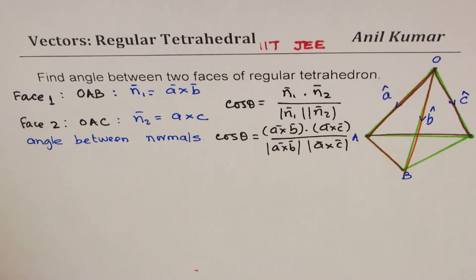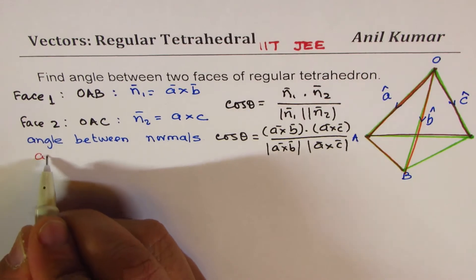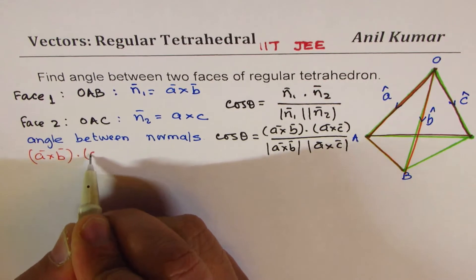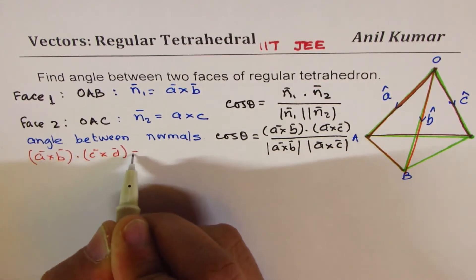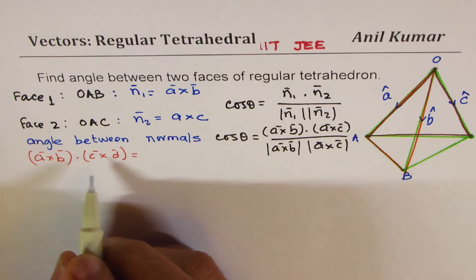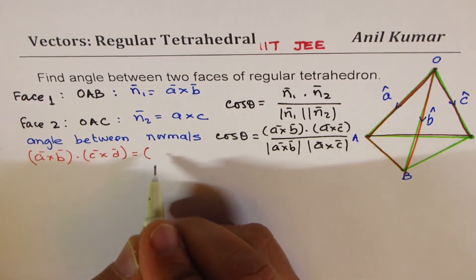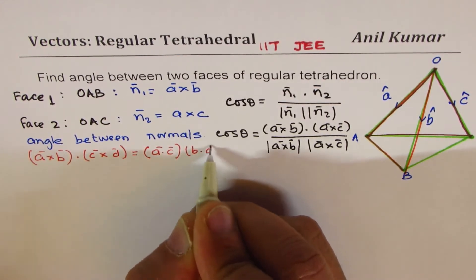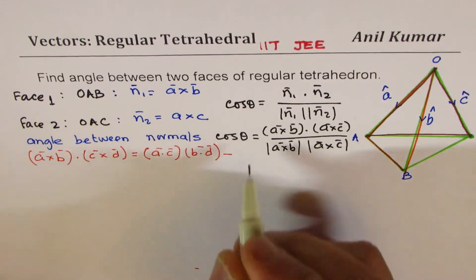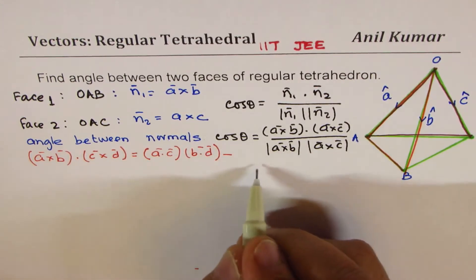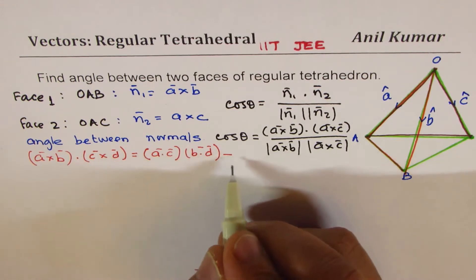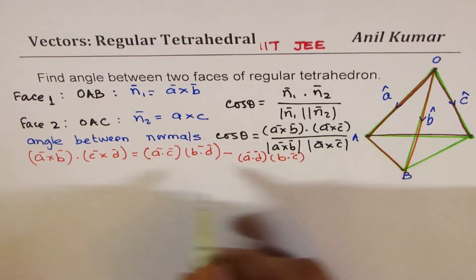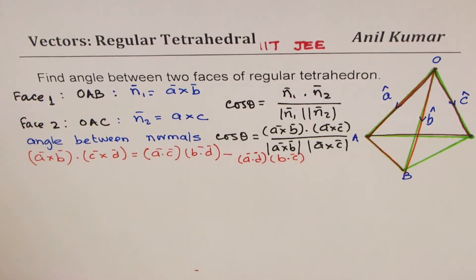Now we need to know the formula for A×B dot C×D. There is a general formula for this. So the formula here is the product of the dot products: (A·C)(B·D) take away (A·D)(B·C). So that's the formula. Let me highlight this formula.